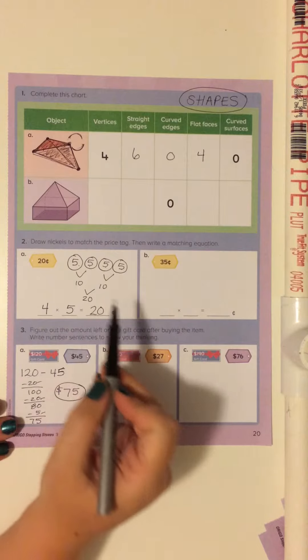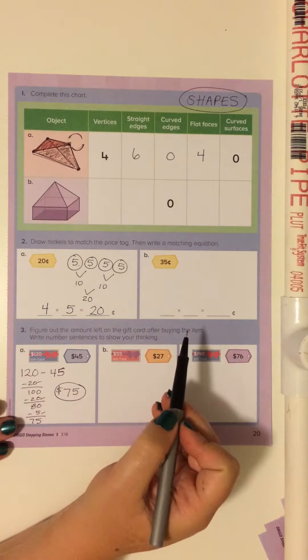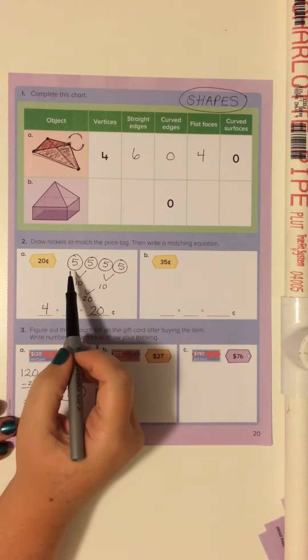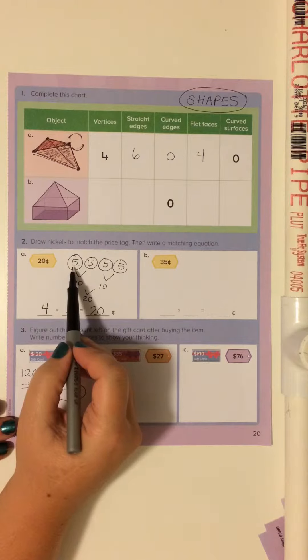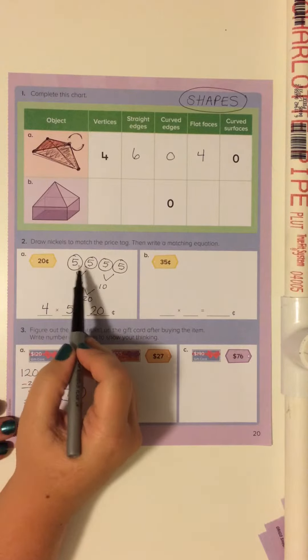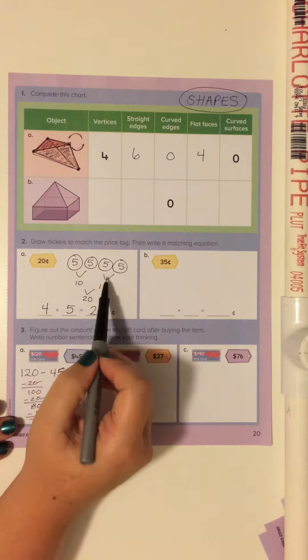Number two says to draw nickels to match the price tag, then write matching equation. Nickels are five cents each, so it's counting by fives: five, ten, fifteen, twenty. And I showed you here that two fives make ten and two tens make twenty.